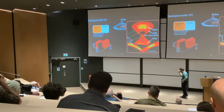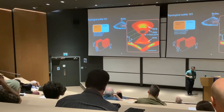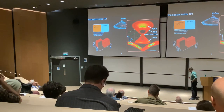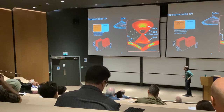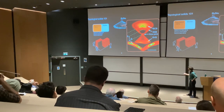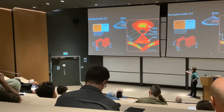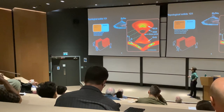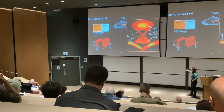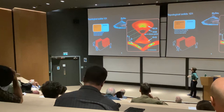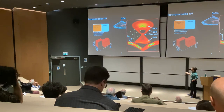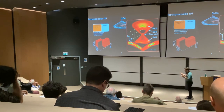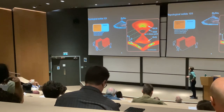This cone-like dispersion relation looks like that of relativistic particles — like the photon — where energy is proportional to momentum. X-rays, for example, have very small wavelengths and correspondingly large momenta, so energy increases with momentum for light. The particles at the surface of bismuth selenide in particular look like zero-mass relativistic particles.